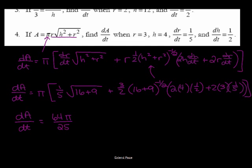From there I trust that you can do the computation and what you should get for your final answer is dA/dt equals 64π/25. This is a changing area so our units will be units squared per unit of time.